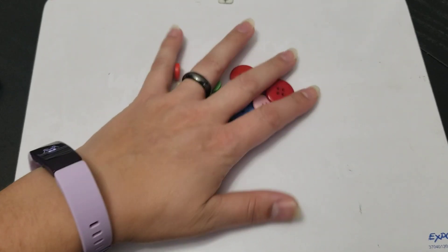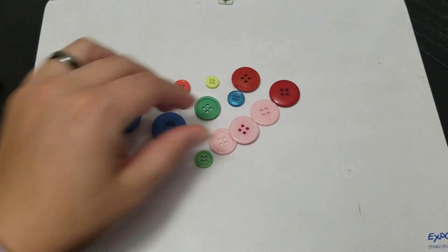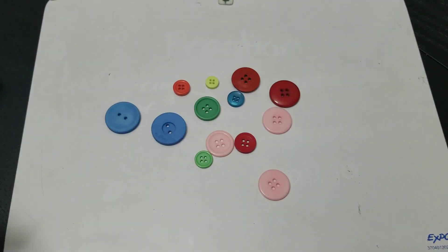Today I'm going to show you with parts of a set. So in order to find parts of a set I have to have a set of something. Today I have a set of buttons. And I'm going to choose to separate my buttons by color.